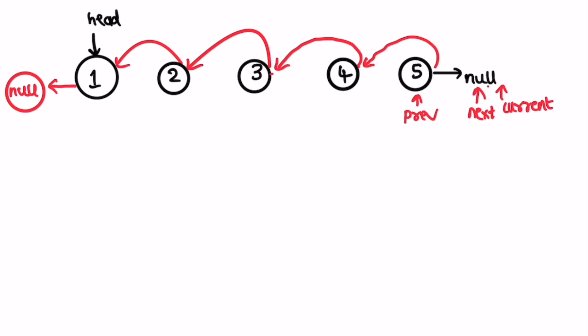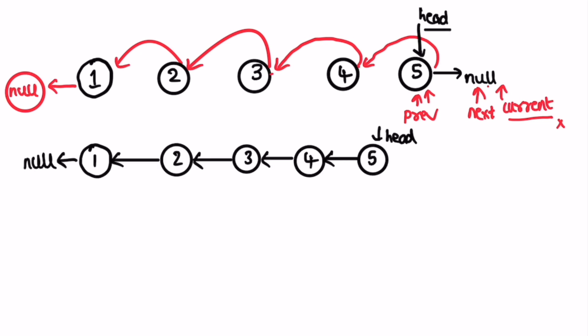In the next check, current is equal to null so we exit the while loop. We now almost have our answer. To return the output, our head should point to the last node, and we already have a pointer — previous — pointing at that node. So we move head to previous, and now we can return head. The output is head pointing to five, four, three, two, one, and null.